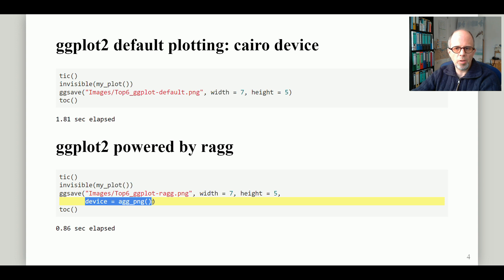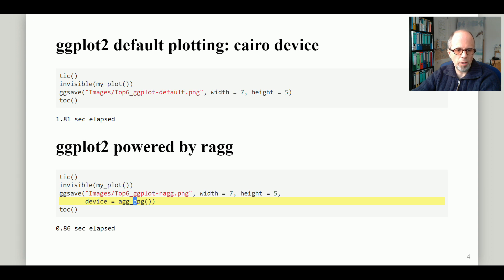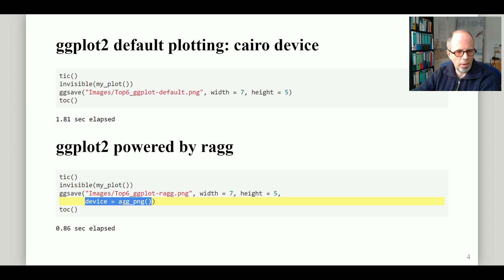You may have seen R code where you use the png function to open a device and then write plotting code — that can also be a base R plot, though I would recommend ggplot2 code. You then end off by closing the device using dev.off. Here we have a shortcut by just specifying the device within the ggsave function, and agg_png is a drop-in supplement for the default png device.